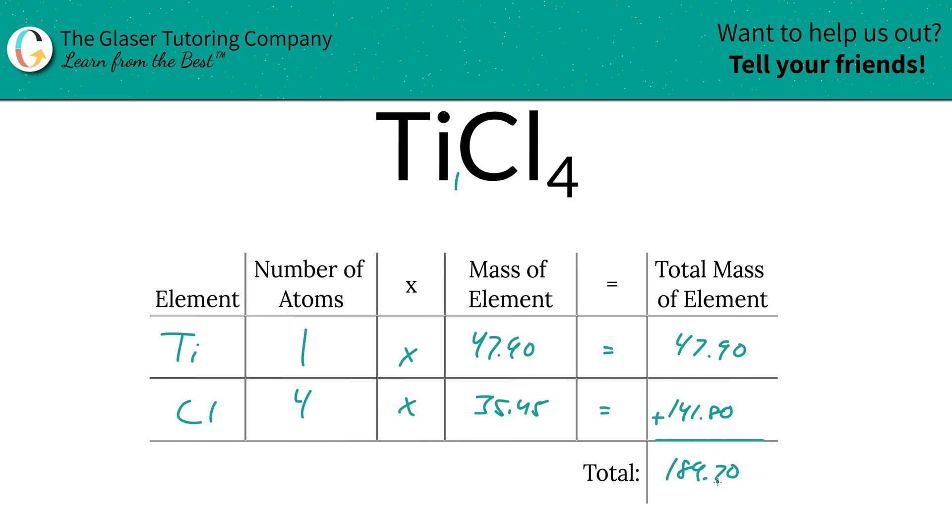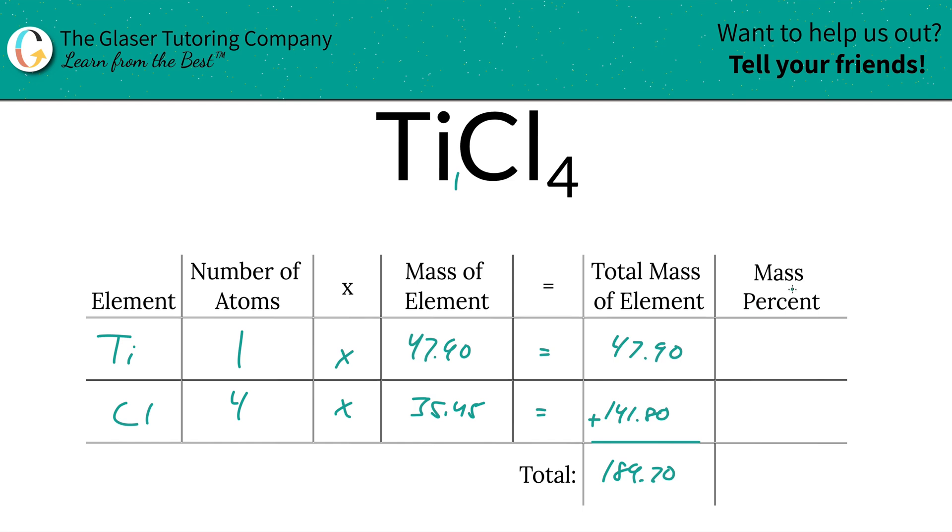So to find the mass percent of titanium, take the total mass of that titanium, 47.90, divided by the total mass of the compound—that's why we had to calculate the total mass first—then simply multiply that by 100. So the mass percent here of titanium is going to be roughly 25.25%.